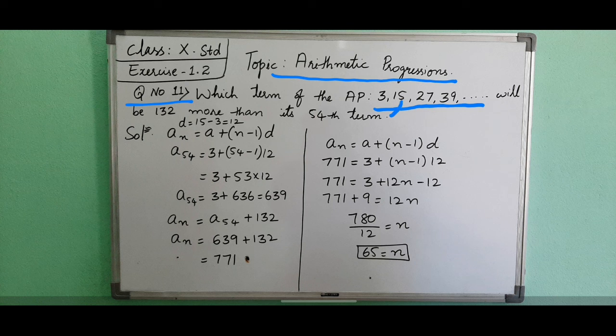d is here. If you subtract 15 minus 3, it will be 12. Then an is a plus (n minus 1) into d. a54 is 3 plus 54 minus 1 is 53. 53 into d - 53 into 12 is 636. Add 3 to 636, it is 639.